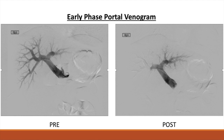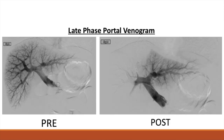In the next three slides, we see side-by-side comparisons of pre- and post-embolization portal venograms to better demonstrate what stasis looks like. As you can see, since the coils have been placed, there is little to no blood flow entering the right lobe of the liver, which is the goal of the procedure.